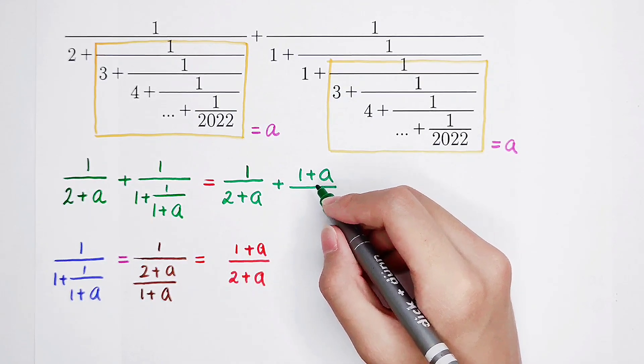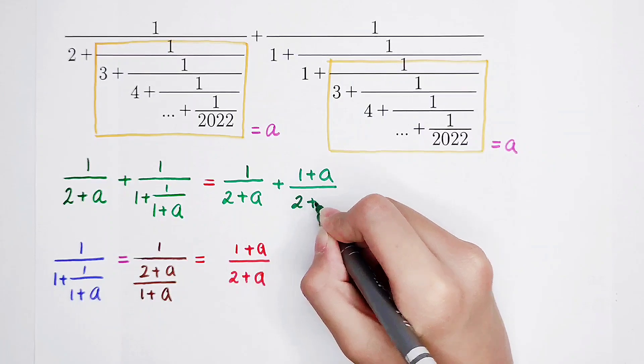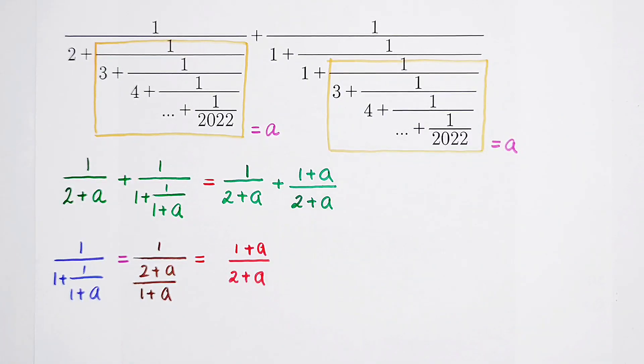1 plus a is the numerator and the denominator is 2 plus a. You can see this denominator is 2 plus a, and this is also 2 plus a. So they have the same denominator. And what's the sum of these two fractions?